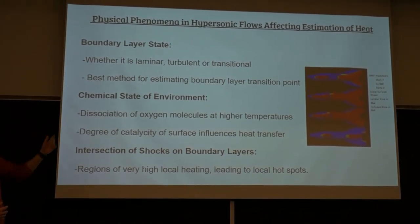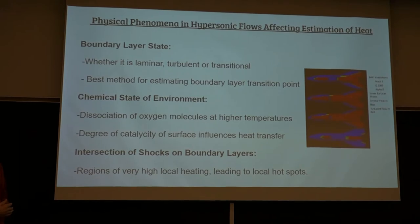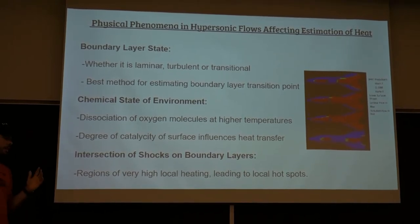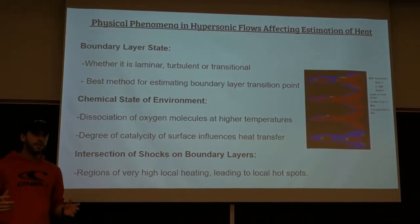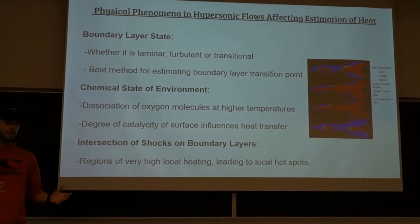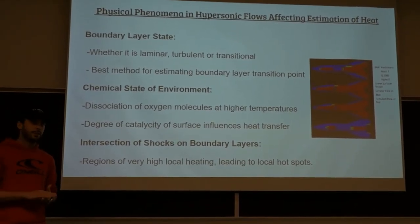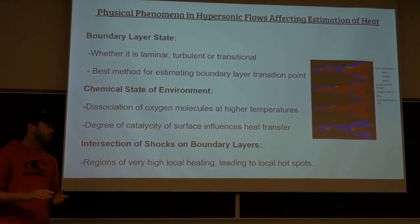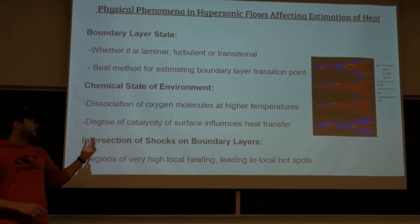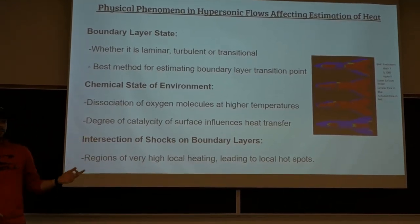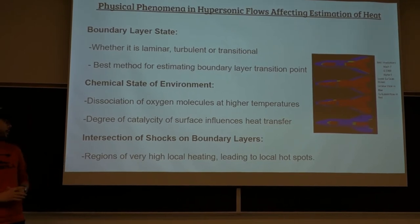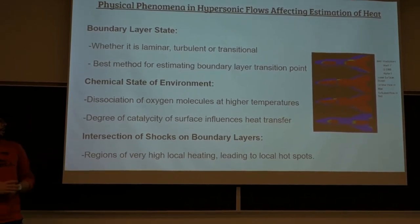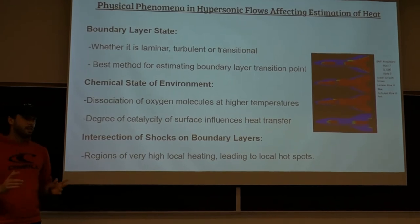Regarding the chemical state of the environment, it's really important to know that at higher temperatures oxygen molecules dissociate, which leads to absorbed energy and the surface temperature being lowered. The degree of catalytic surface also influences the heat transfer. Finally, for the intersection of shocks and boundary layers, regions of very high local heating lead to local hot spots, such as at the wings.